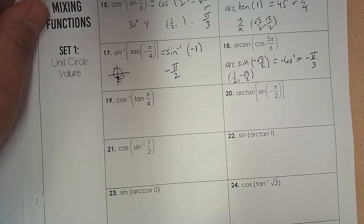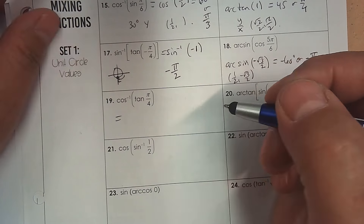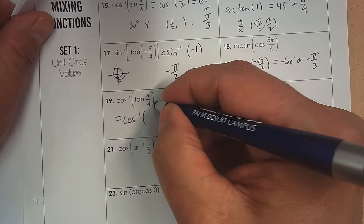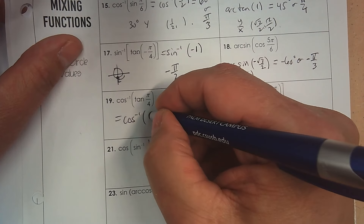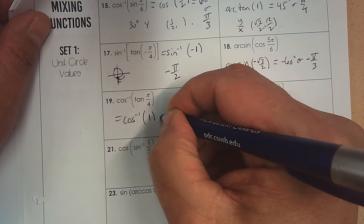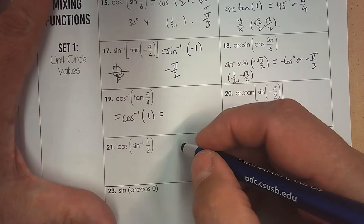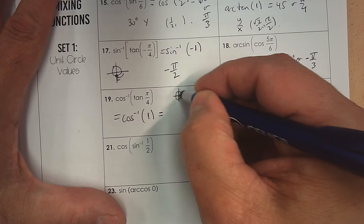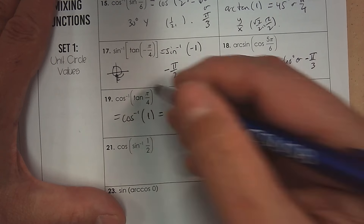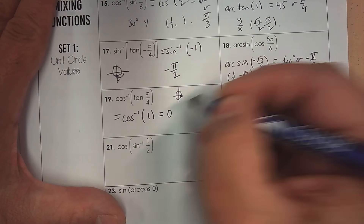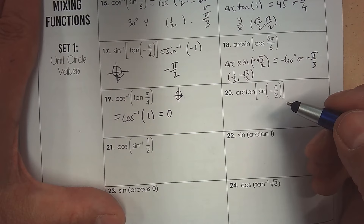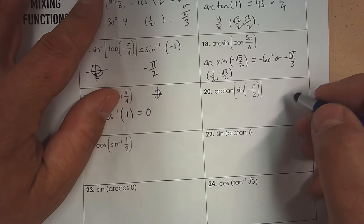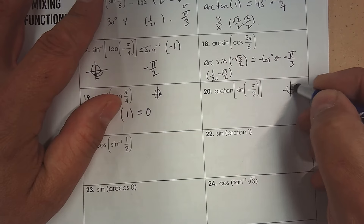Number 19: the value of tangent at pi over 4 — 45 degrees in quadrant 1, y over x equals 1. Then arc cosine of 1 means the x-coordinate equals 1, which is on the far right of the circle, so the angle is 0 radians. Number 20: start inside with negative pi over 2, which is at the bottom of the circle.